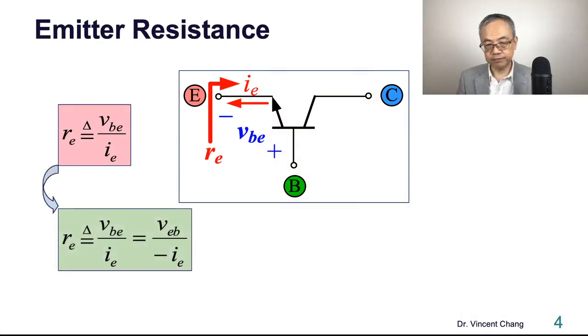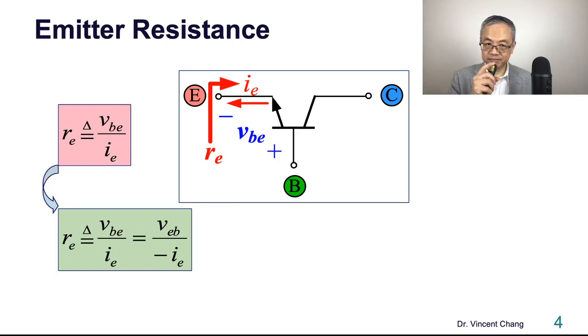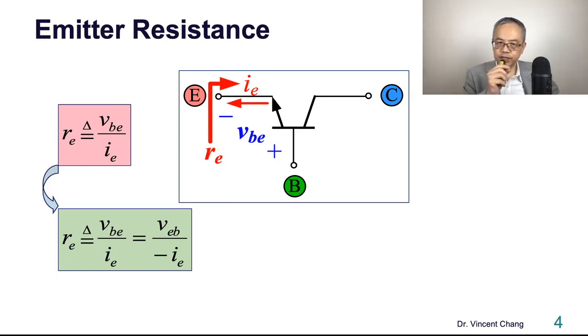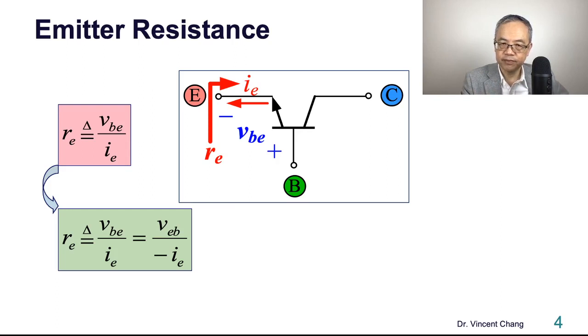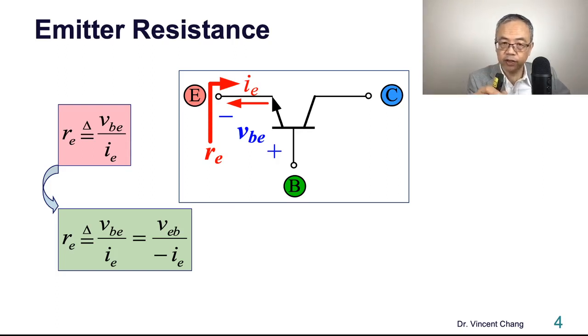What's the meaning of that negative sign? It means the emitter current flowing out of the transistor in that direction is out of phase with VEB, and in phase with VBE.